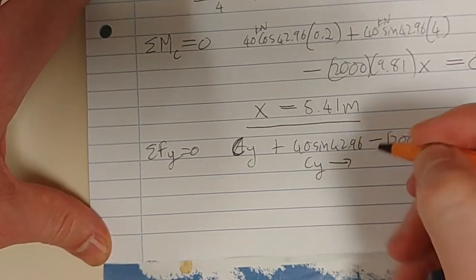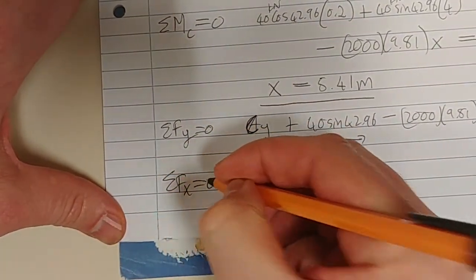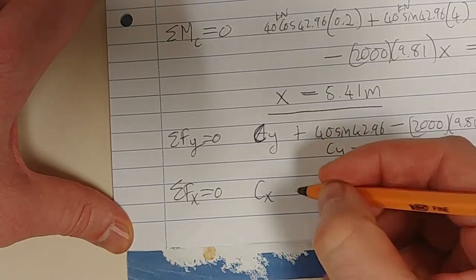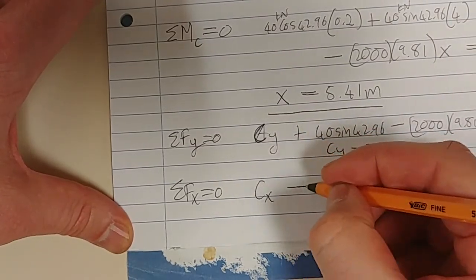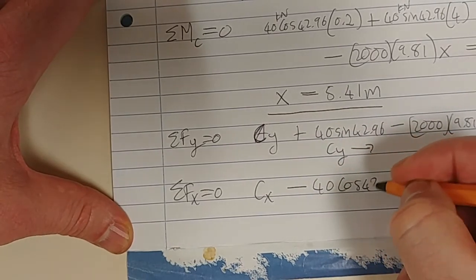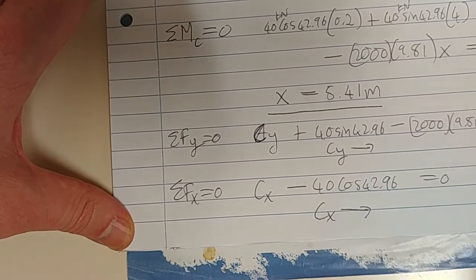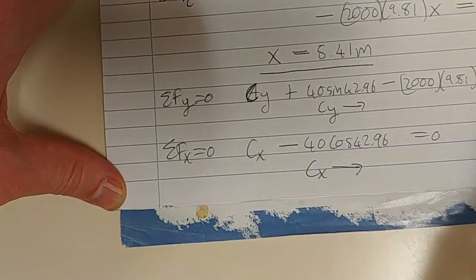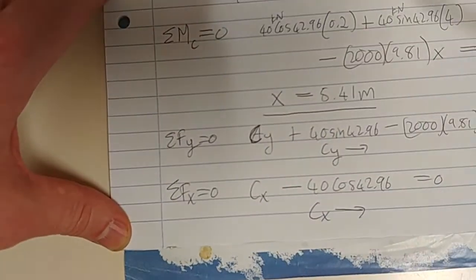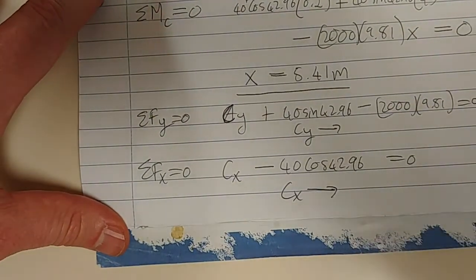Solve for CY. And then we have sum of the forces in the X equals 0. And we have CX minus 40 cos 42.96 equals 0. And you solve for CX. I'm not 100% sure what they are. And I don't want to waste your time by doing the calculation. But I hope you've seen essentially how to solve this problem. Cheers.